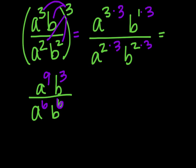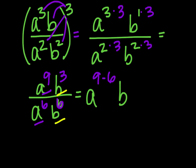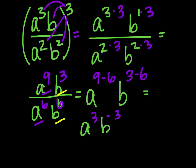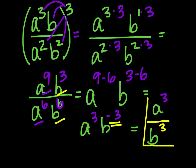We see a's on top and bottom and b's on top and bottom, so we can simplify using the quotient rule. We get a to the nine minus six, times b to the three minus six, which equals a to the third times b to the negative third. Since I don't like the negative exponent in the numerator, we rewrite it as a to the third over b to the third. Final simplified answer: a cubed over b cubed.